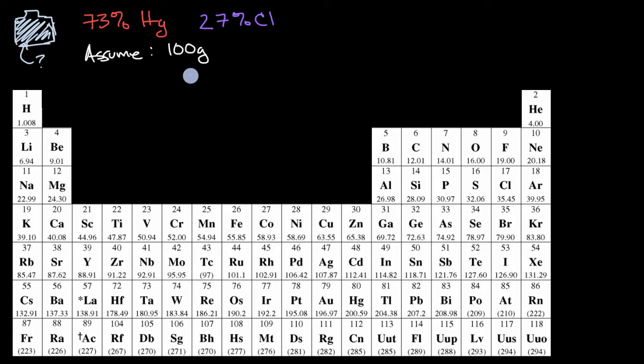Because our whole goal is to say, what's the ratio between the number of moles we have of mercury and the number of moles we have of chlorine? And then that will inform the likely empirical formula.